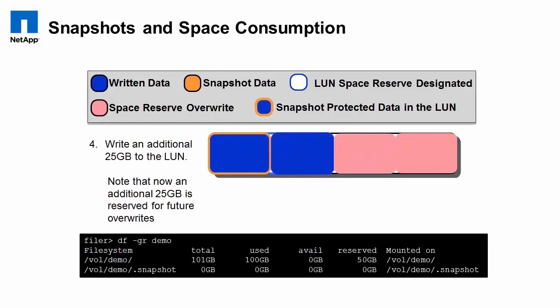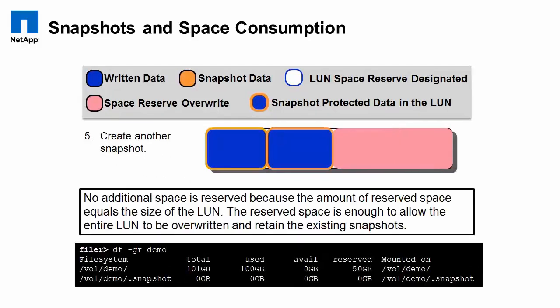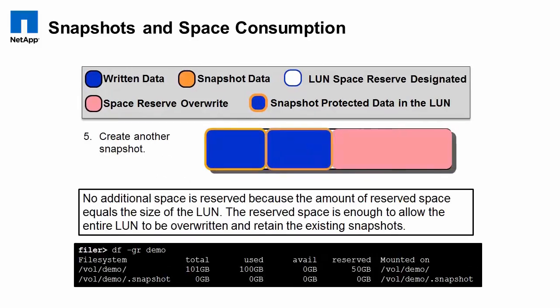We write an additional 25 gigabytes of data, and an additional 25 gigabytes is reserved for future overwrites. Now we take another snapshot. As you can see, we have basically 50 gigabytes of data that is in a read-only state and 50 gigabytes that is reserved.